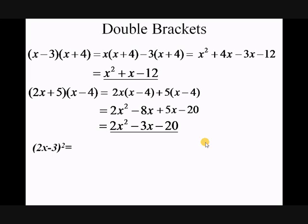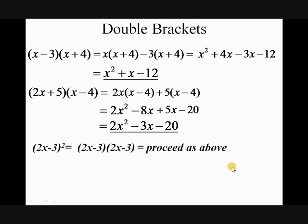Now look at this particular special case: (2x minus 3) all squared. We know that squared means multiplied by itself, so if we showed that as two brackets it would look like (2x minus 3)(2x minus 3), and you would just multiply that out as you would with the ones above. However, some people find difficulty with this method, particularly remembering all the sign work, so there's another system which you might find easier to apply.